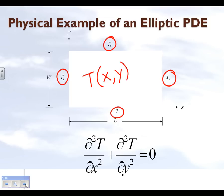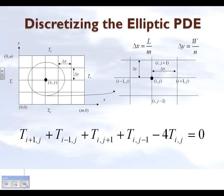The steady state temperature of the plate is given by a particular second order linear elliptic partial differential equation, and that's what we're going to use to find out what the temperature inside this plate will be. Recapping, what we have done is taken this rectangular plate and broken it up into square grids.